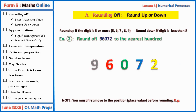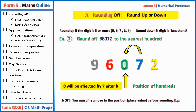To round this number to the nearest hundred, move to the position of hundreds, which is occupied by zero. The number after zero is seven, so it is going to affect this position — we round up to one. The zero becomes one, and the digits after the one are replaced by zeros.